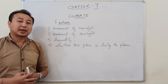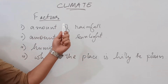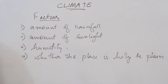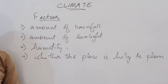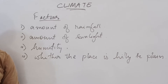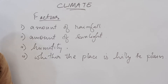The climate of a place is affected by certain factors. There are four main factors which affect the climate of a place. The first factor is the amount of rainfall that place receives. The second is the amount of sunlight received by the place. The third is humidity — humidity is the amount of water vapor present in the atmosphere. The amount of humidity depends on how much water vapor is released to the atmosphere by plants as well as by the process of evaporation.